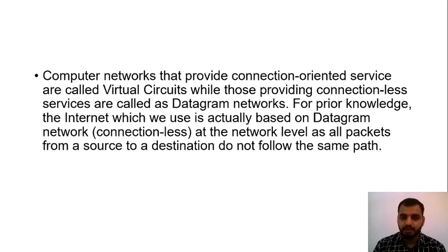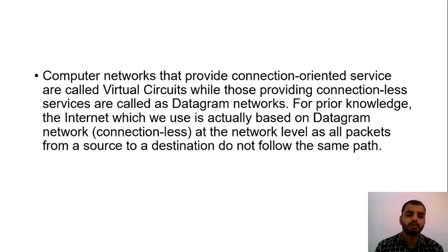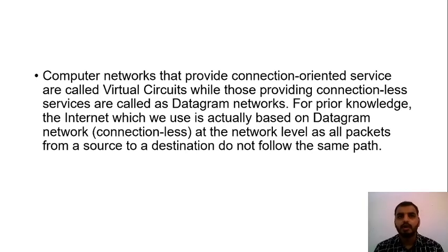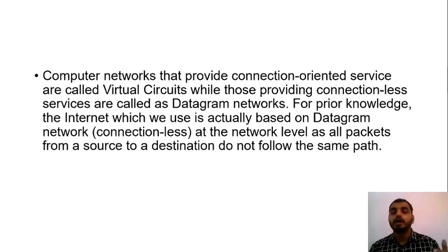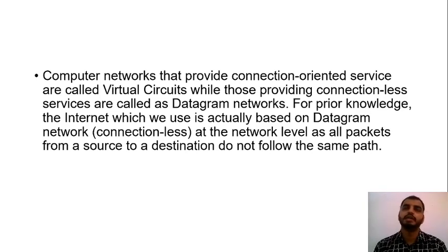For prior knowledge: the internet that we use is actually based on a datagram network, or connectionless, at the network level — because all packets from a source to a destination do not necessarily follow the same path. In connection-oriented networks, you are bound to a specific path by which traffic and packets will move from source to destination.